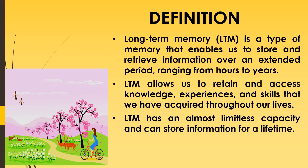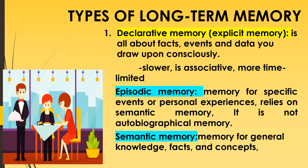An example of long-term memory is the recollection of an important event in your life from the distant past, or the bicycle riding skills that you learned in childhood. There are two main types of long-term memory: declarative and non-declarative.